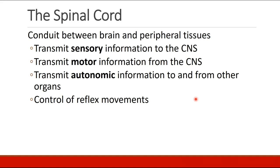The function of the spinal cord is to serve as a conduit between the brain and the peripheral tissues. It transmits sensory information to the CNS, transmits motor information from the CNS, transmits autonomic information to and from other organs, and controls reflex movements.